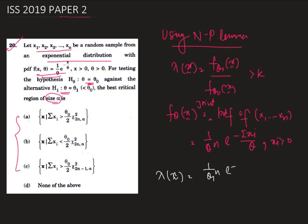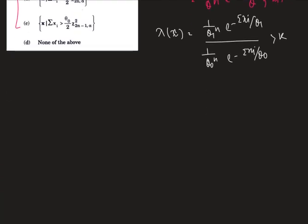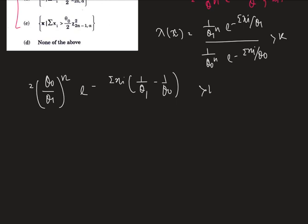Therefore lambda(x) will be: 1 by theta 1 to the power n, times e to the power minus sum over xi divided by theta 1, divided by 1 by theta naught to the power n, times e to the power minus sum over xi divided by theta naught, greater than k. We can write this as theta naught divided by theta 1 to the power n, times e to the power minus sum over xi multiplied by (1 by theta 1 minus 1 by theta naught), greater than k.